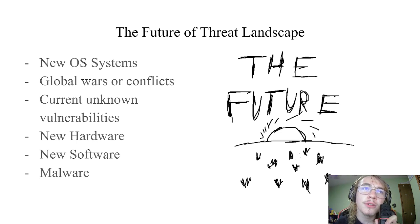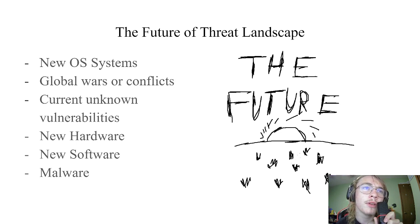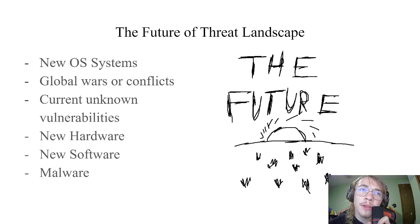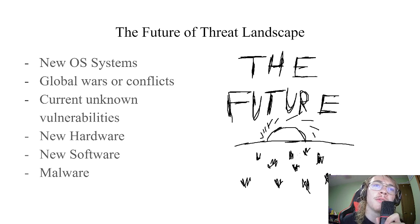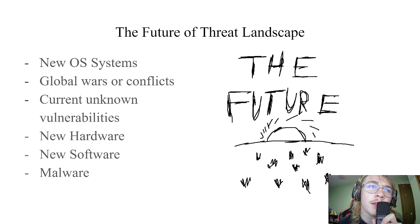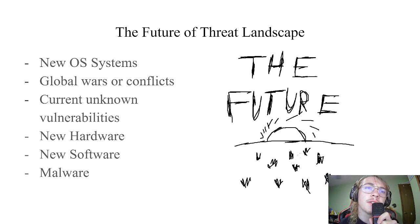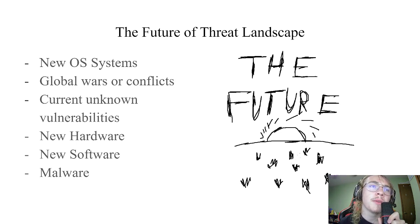Third is current unknown vulnerabilities — these are vulnerabilities cybercriminals could use to bypass defenses we set up in the future. Fourth and fifth are new OS and hardware, which are very similar in that each tends to add new features over the last, potentially creating vulnerabilities for cybercriminals to exploit. Sixth and lastly is malware: as defenses get stronger, malware gets smarter, which could greatly impact how we defend against and look for malware in the future.